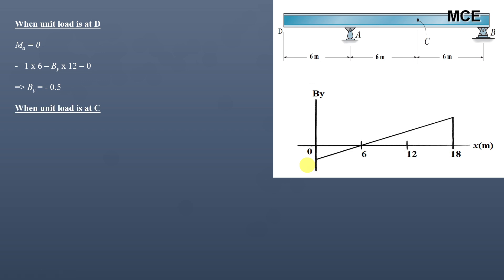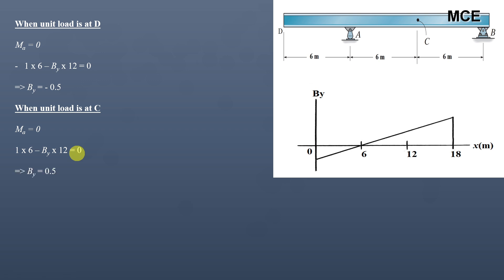To find the ordinate at C, or 12 meters, we place the unit load at C and again take the summation of moments about A equals zero. The moment of the unit load about A is 1×6 (clockwise, positive) and the moment of BY about A is BY×12 (anti-clockwise, negative). Taking clockwise as positive gives BY equal to 0.5, so the ordinate at 12 meters is 0.5.